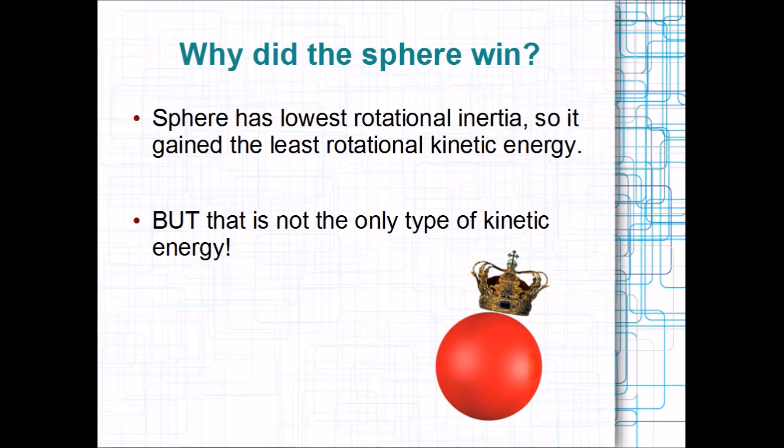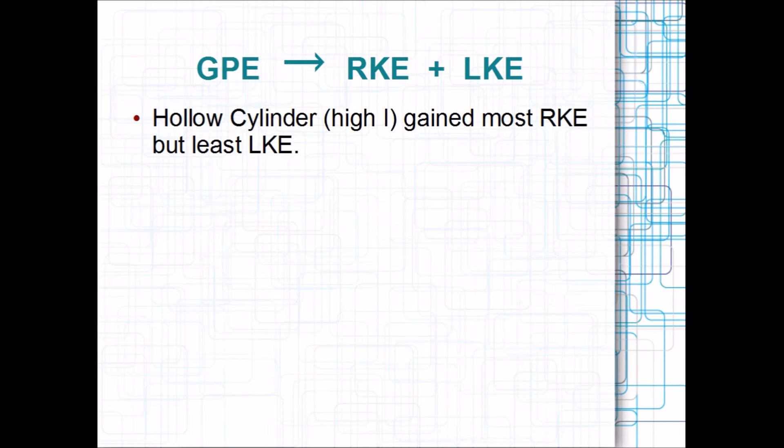But, rotational is not the only type of kinetic energy. If we look at each shape in turn, we find that the hollow cylinder, with the highest inertia, gained a lot of rotational kinetic energy, but no linear kinetic energy.